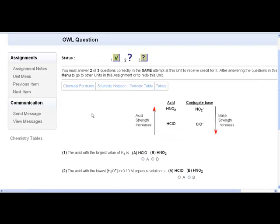So let's try one more. The acid with the largest value of Ka is, well, HNO2 is a stronger acid than HClO. So the larger Ka is going to be associated with HNO2. So click on D.